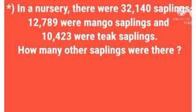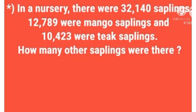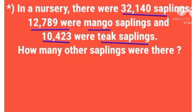Now see the first question here. In a nursery, there were 32,140 saplings. 12,789 were mango saplings and 10,423 were tick saplings. How many other saplings were there? What is asked here? The number of other saplings. What information is given? Total saplings: 32,140. Mango saplings: 12,789. Tick saplings: 10,423.